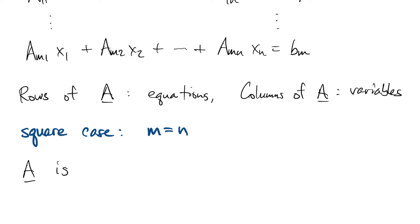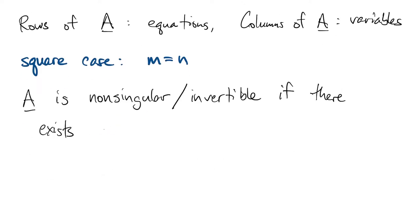And then we say that A is non-singular, or we say it's invertible, if there exists an inverse matrix, such that the product of A with its inverse is the identity.